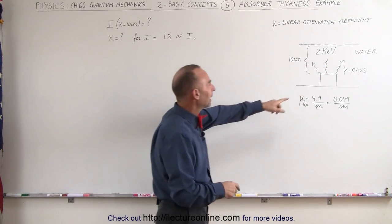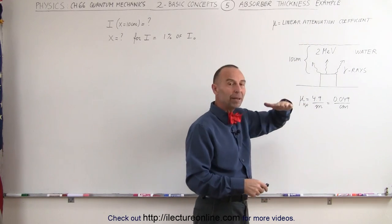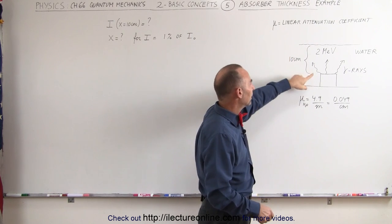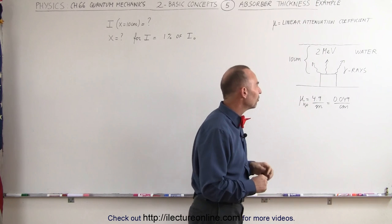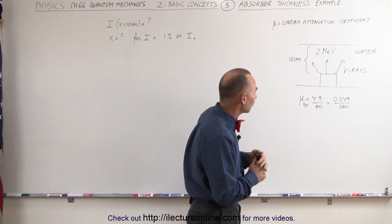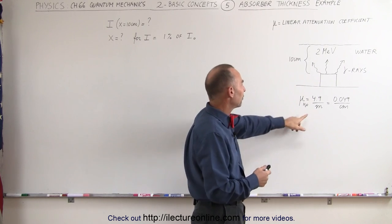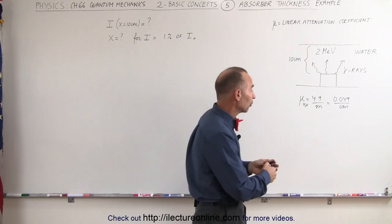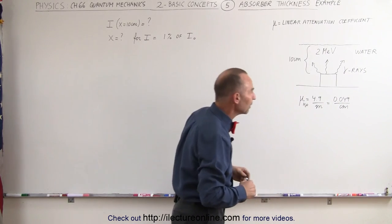Let's say that we have a gamma ray radiation source placed underneath some water. Let's say we have a 10 centimeter layer of water. The radiation coming out has an energy of 2 MeVs, 2 million electron volts, and we know that the linear attenuation coefficient of water at that particular frequency of radiation is 4.9 per meters converted to centimeters is 0.049 per centimeter.